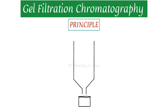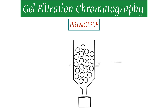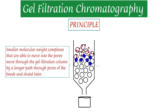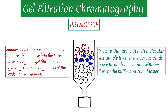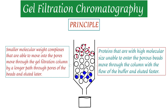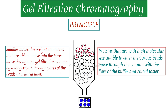Coming to the principle: in the stationary phase there is a porous matrix present. When we pass the sample, the porous matrix will trap the small molecules. Large molecules move faster and elute first. Small molecules, due to their interaction with the porous matrix, move slower and are eluted later.